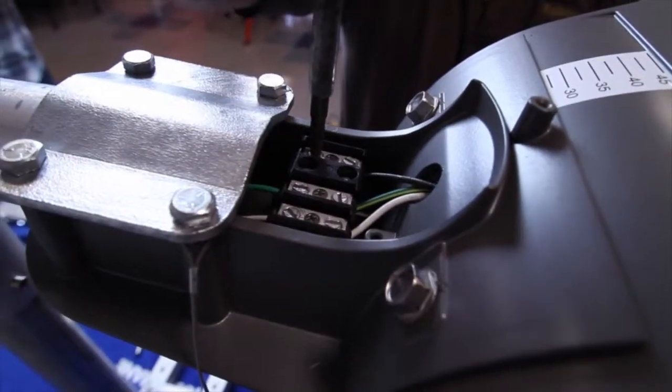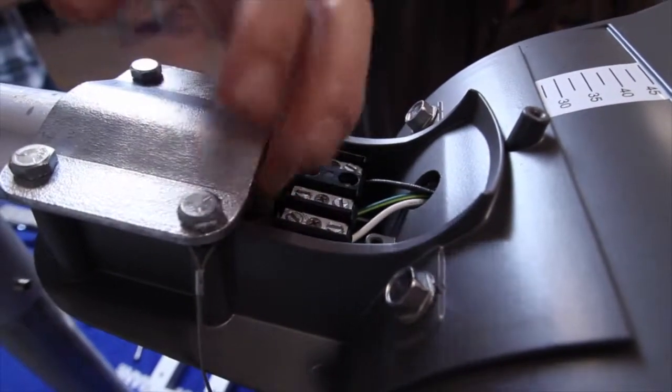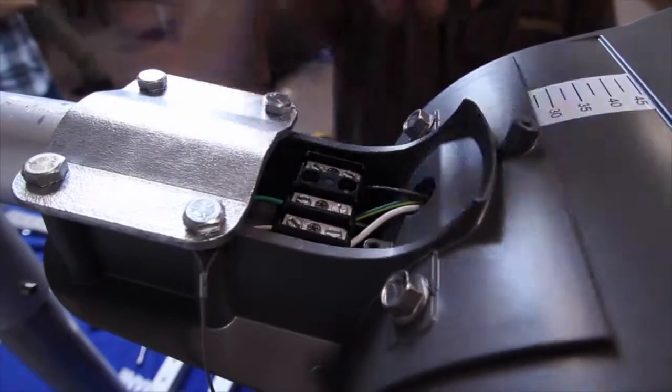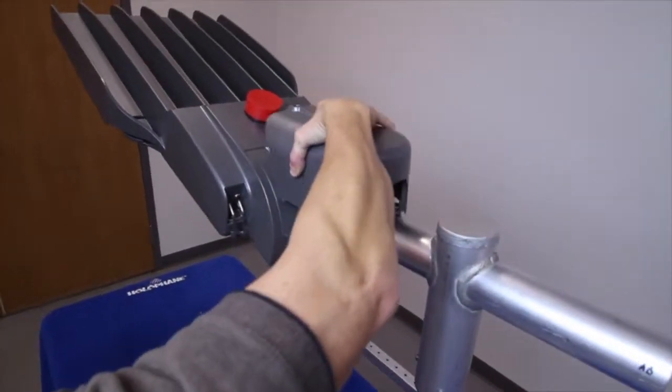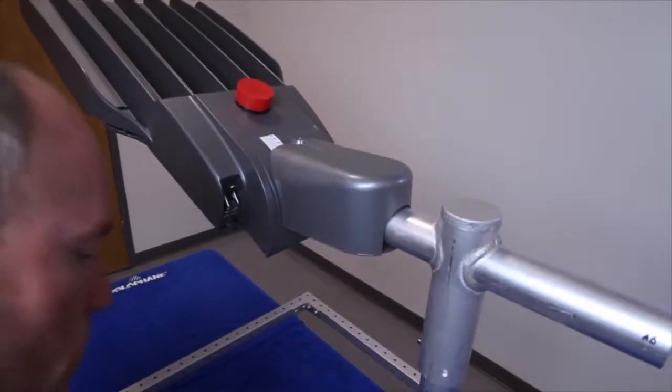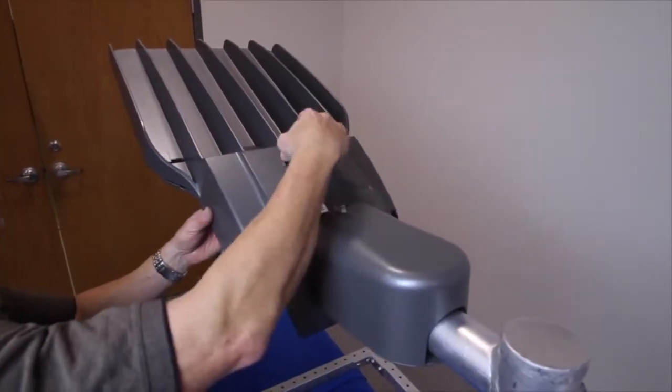Wire the luminaire per the wiring instructions and ensure that the connections are secure by pulling on each of the wires. Reinstall the cover. Lastly, install the photocell.